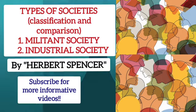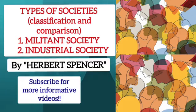The characteristics of industrial society contrast strongly with those of the militant type. The first characteristic of an industrial society is the recognition of personal rights. In the industrial society, members hold personal rights as citizens of the community, and there is also an active concern on the part of the members for the maintenance of these rights.